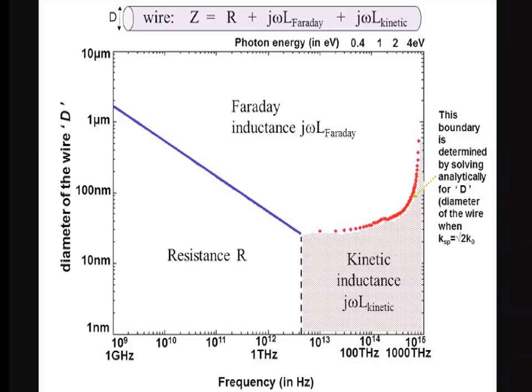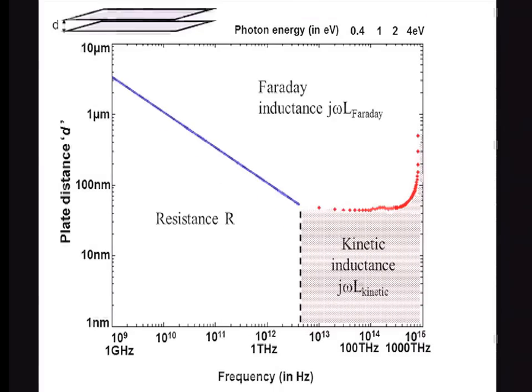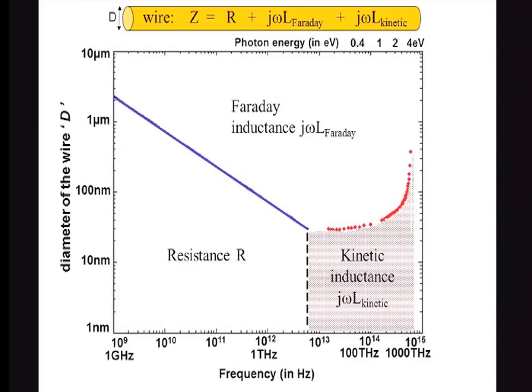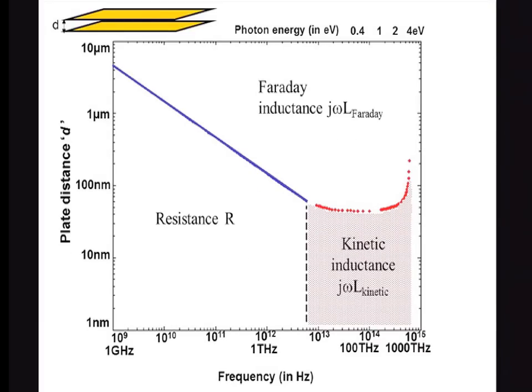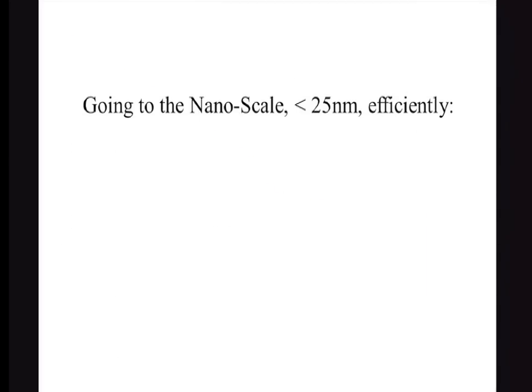Here are examples for silver for a wire, silver for a parallel plate, gold for a wire, and gold for a parallel plate. They're all kind of similar. You need to be toward the blue and toward the nanoscale to call it plasmonic.